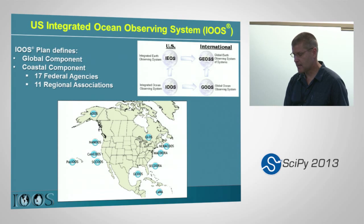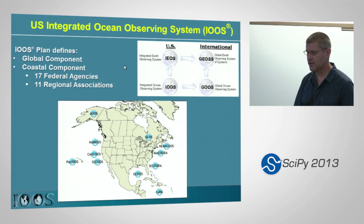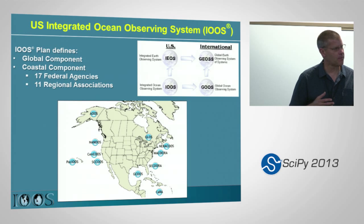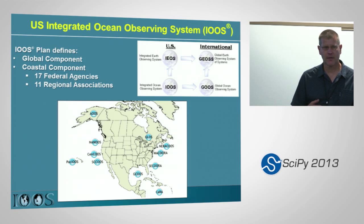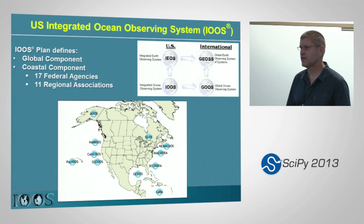So just what is IOOS? It's 11 regional associations, 17 agencies, and it's part of a larger international effort as well. In each of these regions there's a bunch of different ocean models running and a bunch of different data being collected. So IOOS has this problem: how do we integrate all this information?